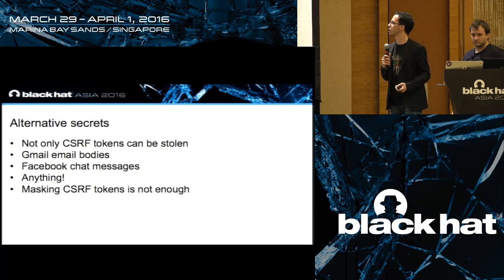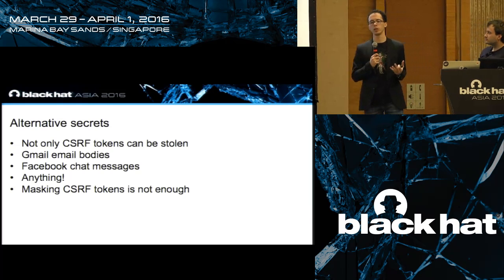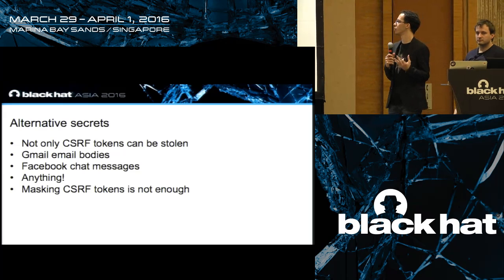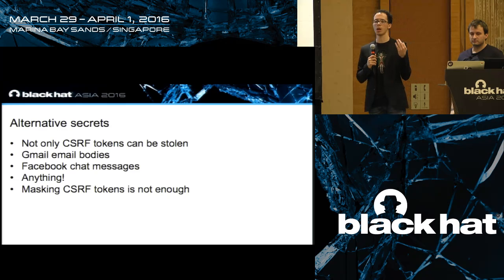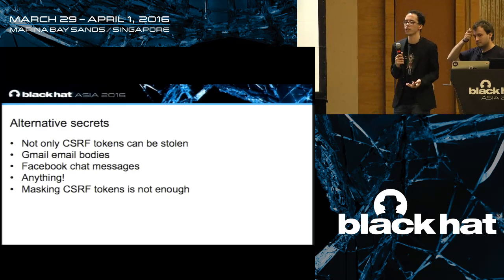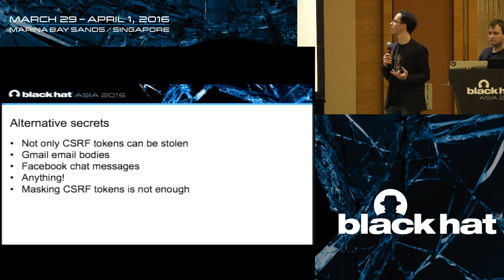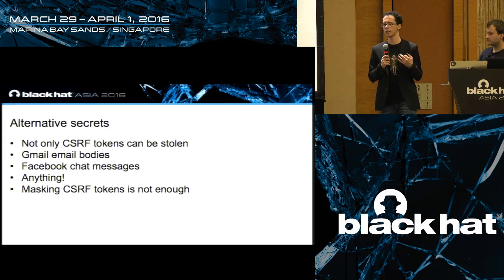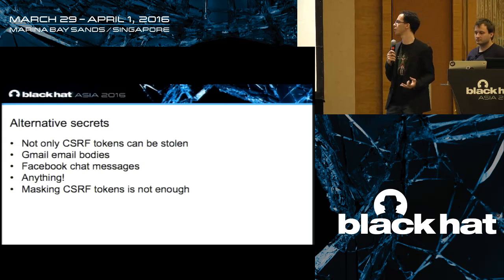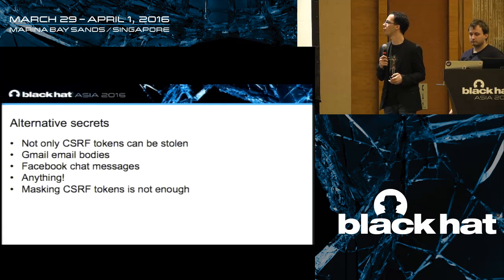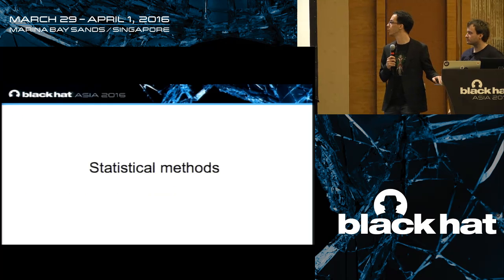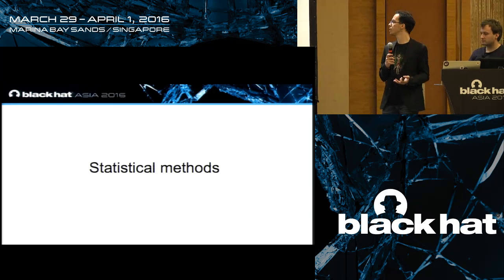What are those alternative secrets? Anything contained in the response plaintext body is a possible secret - Gmail emails, Facebook chat messages, financial data, or anything else. Facebook has used a mitigation technique by masking CSRF tokens, which is good, but it's not enough, because although it prevents the attack against tokens, it does not work for other secrets in the response body. Our most important contribution is the statistical methods we implement to bypass noise.